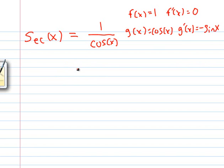So we need the derivative of the top, which is 0, times the bottom, which is cosine of x, minus the derivative of the bottom, negative sine of x, times the derivative of the top, which is 1.